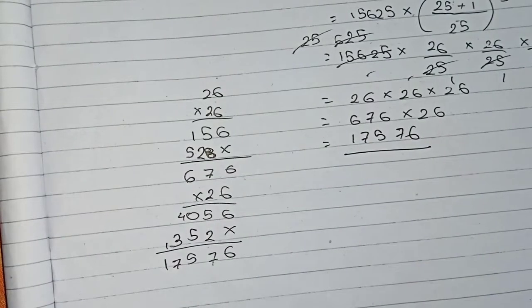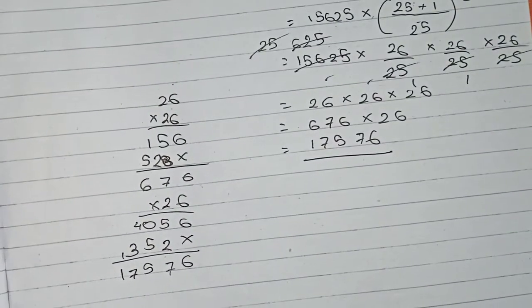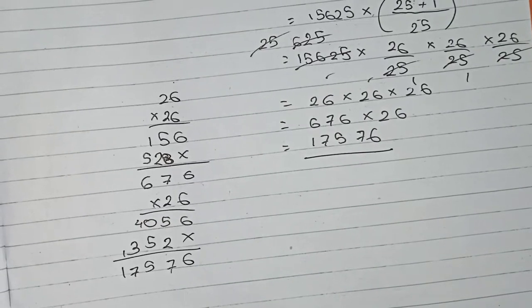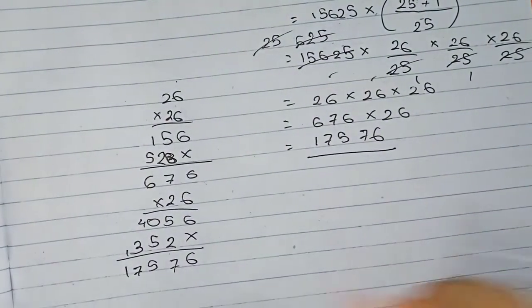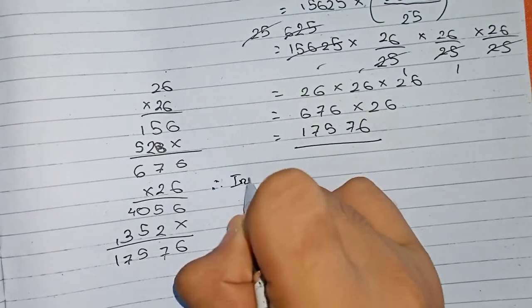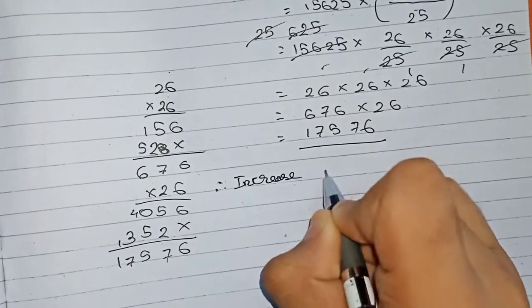So this will be the population of the town after 3 years. You have to find out the increase in population after 3 years. So increase in population means this number you have to subtract from the original principal. Therefore, you write: Increase in population...